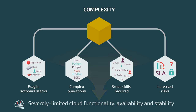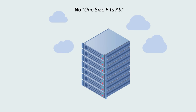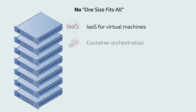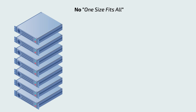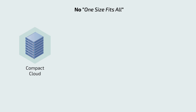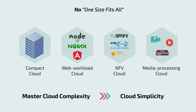The result: severely limited cloud functionality, availability, and stability. Real-world problems with complexity increase when you need multiple cloud frameworks and software platforms to solve a range of business problems. Some businesses even need custom cloud architectures — maybe one or even several. With all this going on, how do you master cloud complexity and get to cloud simplicity?